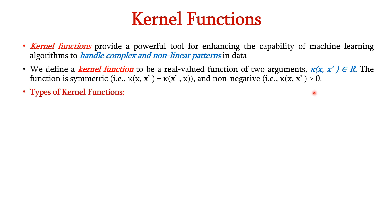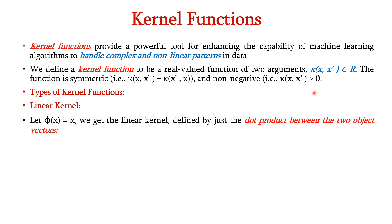Let us see different types of kernel functions. The first one is the linear kernel. Let pi of X be equal to X, where pi is the transformation function applied on the input feature X. In this case, we get the linear kernel defined by just the dot product between the two object vectors, represented as K of X comma X dash is equal to X transpose into X dash.